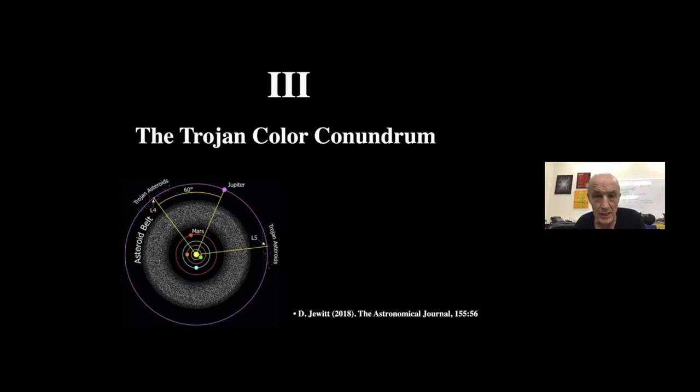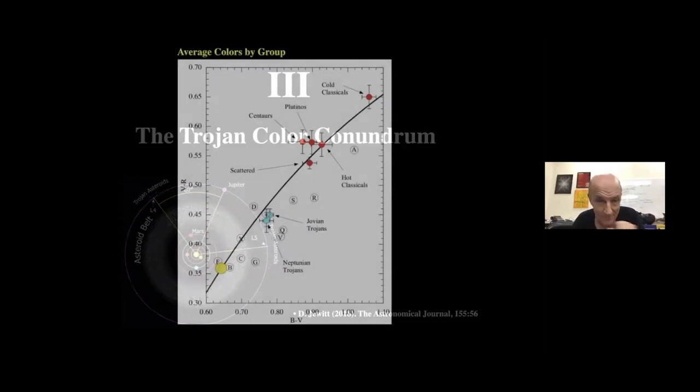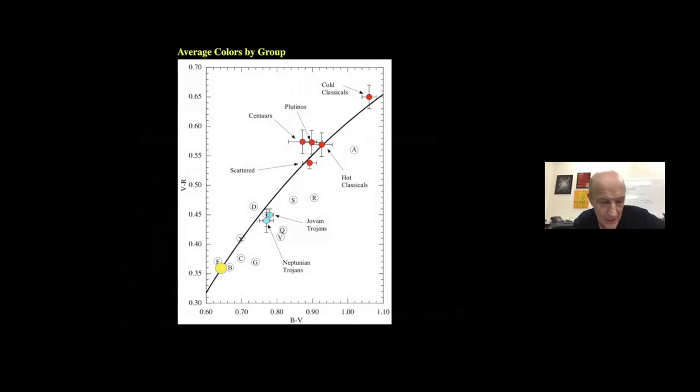A couple of years ago, I thought, we know of another Trojan population. There are Trojan asteroids of Neptune as well, discovered by Scott Shepard and Chad Trujillo and some other people. It seemed to me that if the Trojans are captured from the Kuiper belt, then the colors of the Trojan. This is a very simple, dumb argument. The Trojans should have basically the same colors as the source population from which they are derived in the Kuiper belt. So my idea was just to go and measure the colors of the Neptune Trojan objects and compare with the Kuiper belt colors. So I did that.